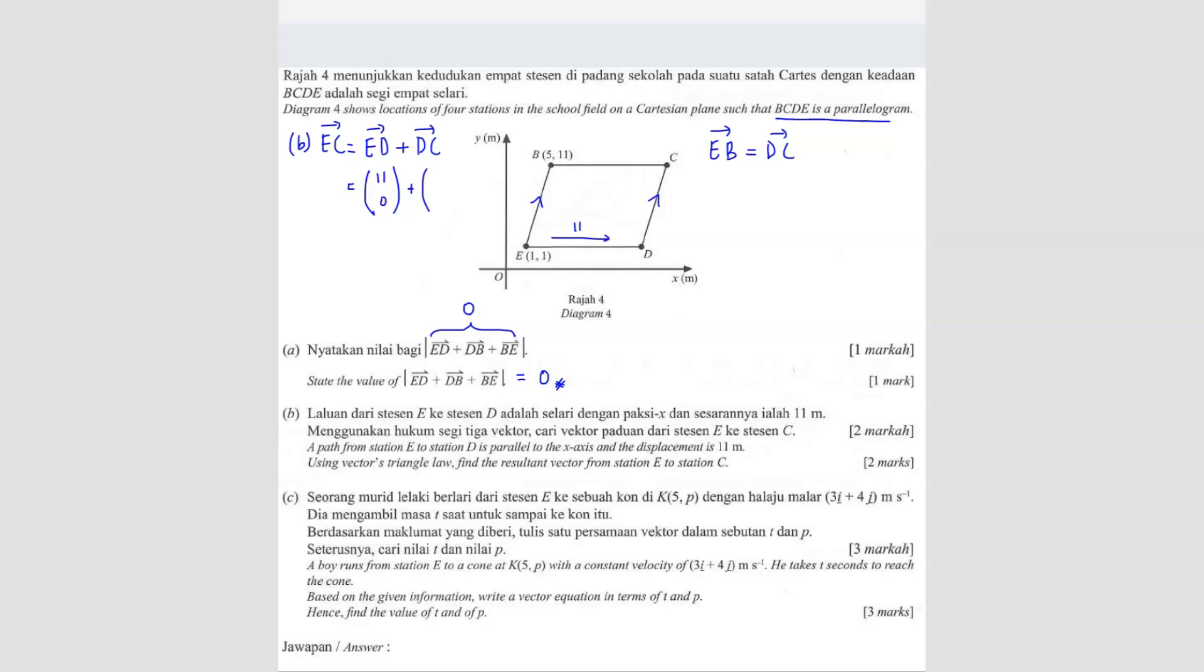So how to find EB? You see how they move. So this is one and then you move to, this is five, right? The x value is five, x value is one. So from one to five, so that means they move four units to the right. Correct? And then how many units up? So this is one and this is 11. So you move 10 units up. So the vector DC is actually what? Four units to the right and 11 units up.